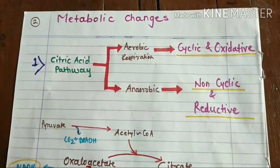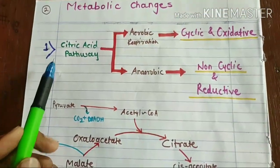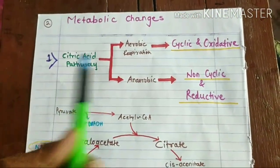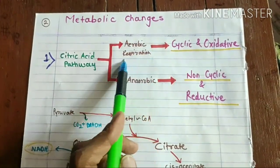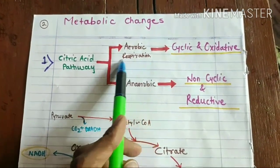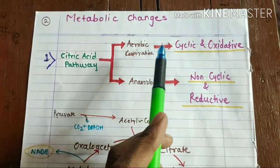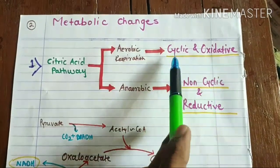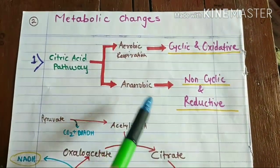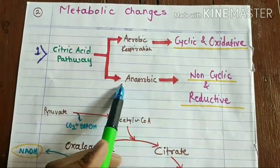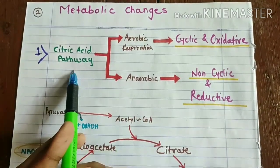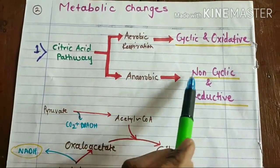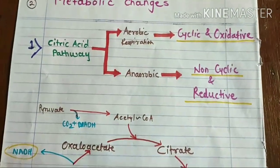The first kind of metabolic change is a change in the citric acid pathway. When the organism is growing in aerobic condition — carrying out aerobic respiration — the citric acid pathway will be cyclic and oxidative. But as soon as the oxygen is depleted and the organism is shifted to anaerobic condition, this citric acid pathway becomes non-cyclic and reductive.